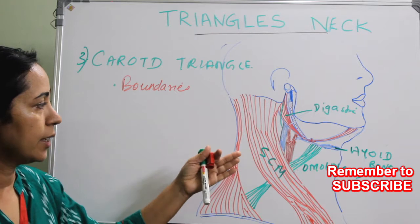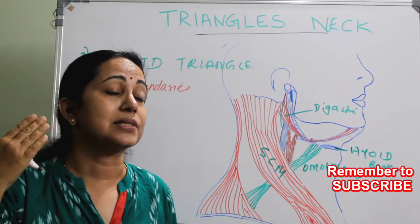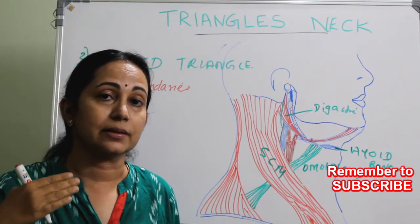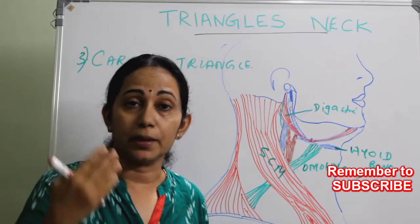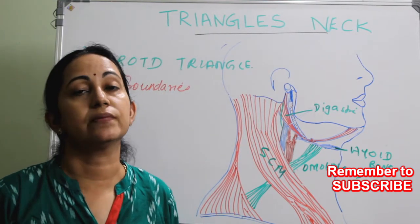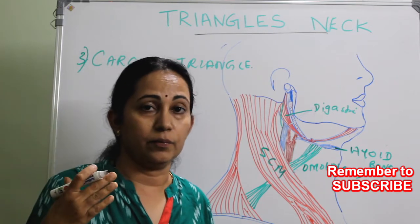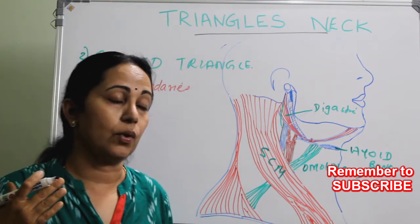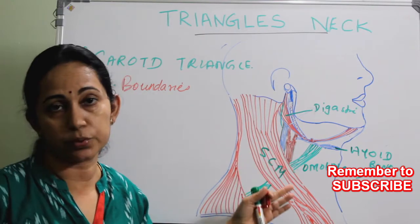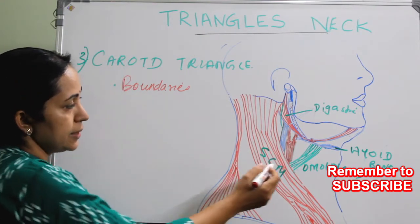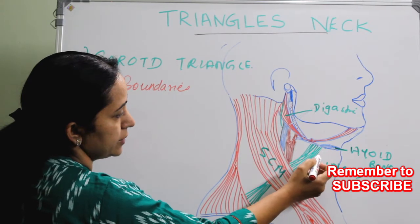Laterally, it is formed by the skin, subcutaneous tissue, then the platysma muscle, and also the investing layer of deep fascia forms the lateral wall. The floor is formed by muscles — the thyroid cartilage is an important landmark here.